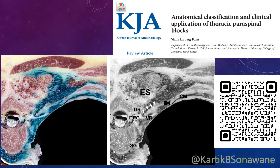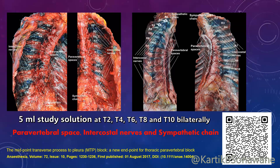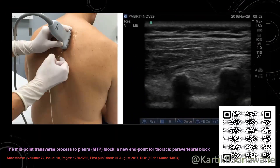In another dye study, 5 ml of dye solution was injected at T2, T4, T6, T8, and T10 levels bilaterally, showing consistent spread over the paravertebral space, intercostal nerves, and sympathetic chain. For the MTP block, the linear ultrasound probe is kept parasagittally over the upper thoracic region to obtain the sonoanatomy picture.